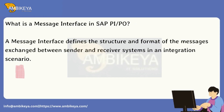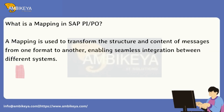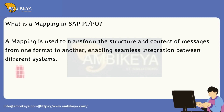What is a message interface in SAP PI/PO? A message interface defines the structure and format of the messages exchanged between sender and receiver systems in an integration scenario. What is a mapping in SAP PI/PO? A mapping is used to transform the structure and content of messages from one format to another, enabling seamless integration between different systems.